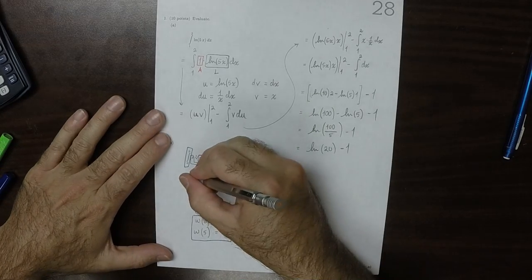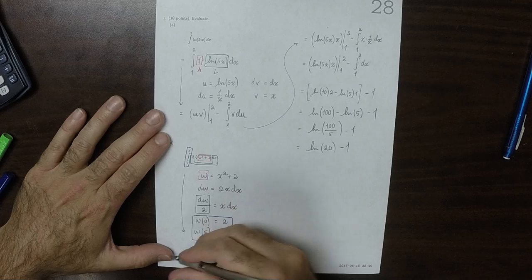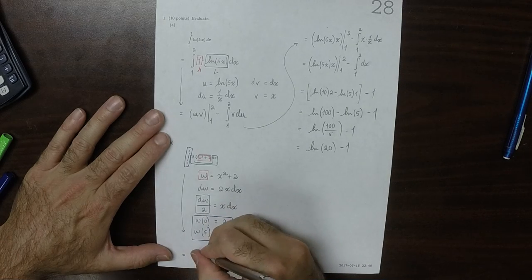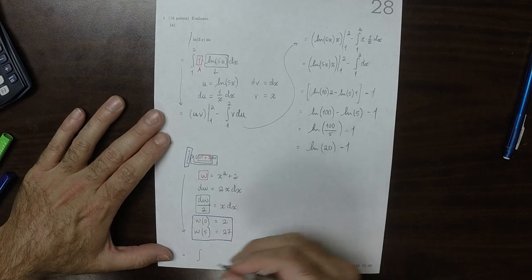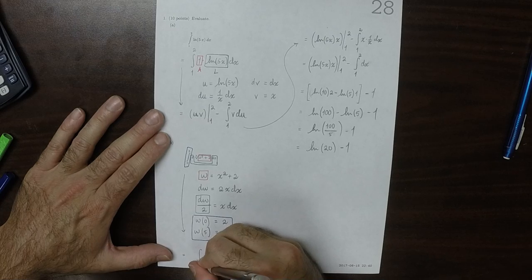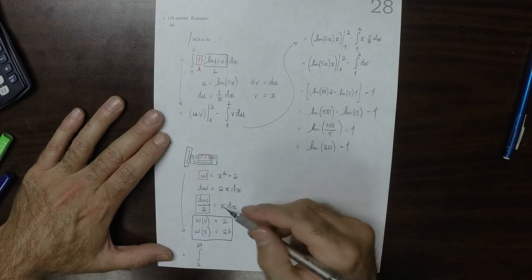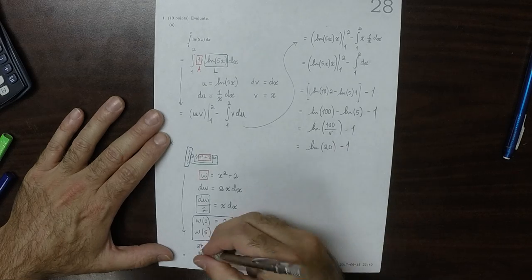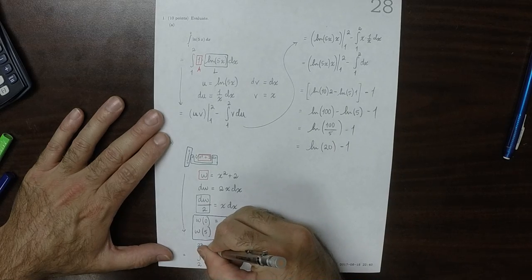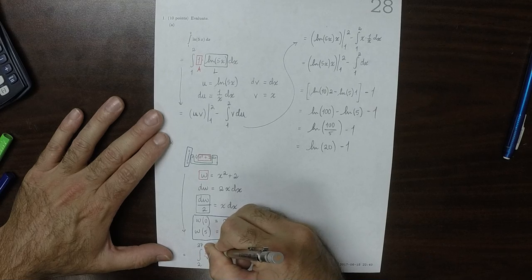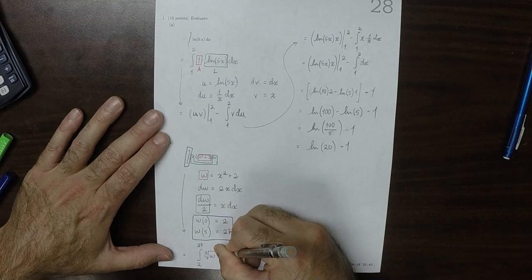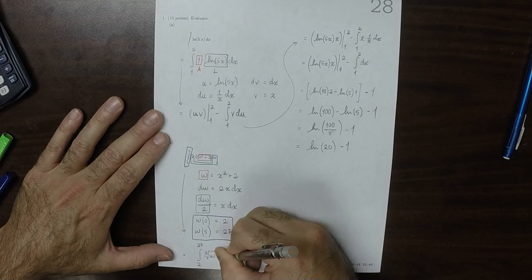So making that change, that's now integral from 2 to 27. x dx becomes dw over 2, so this would be cube root w, and then dw over 2.